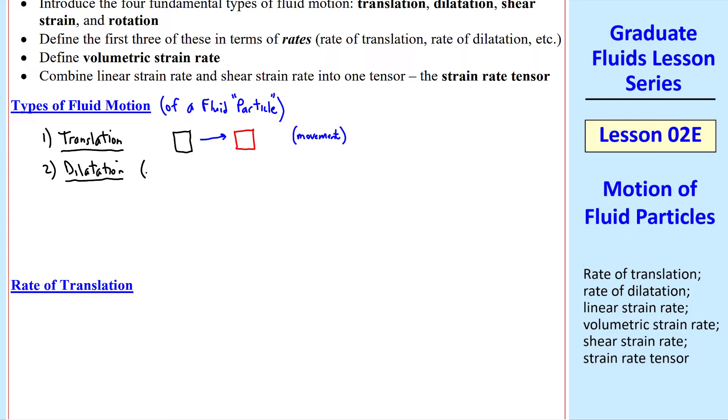We also have dilatation, also called linear strain, where our original square particle becomes rectangular. In the case I've drawn, it's stretched horizontally and shrunk vertically. These are for two-dimensional flows, but you can imagine similar things happening in three dimensions.